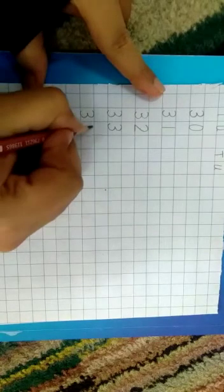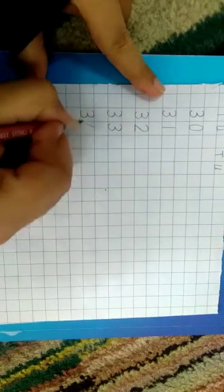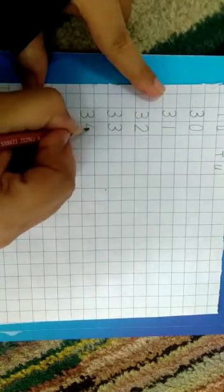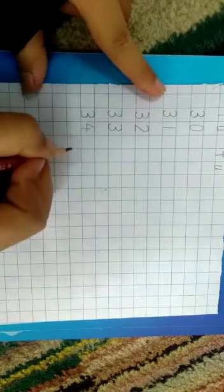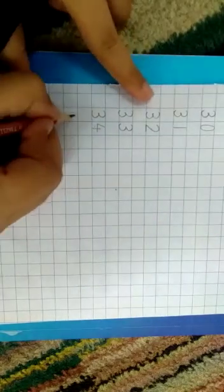Next one is 30. Four. Slant line. Then straight.